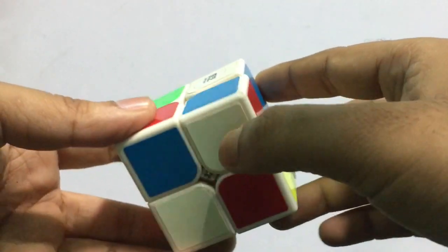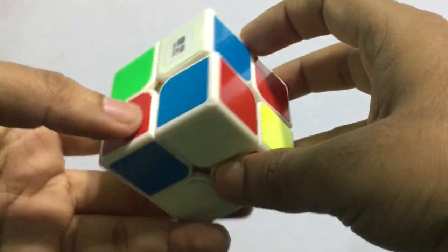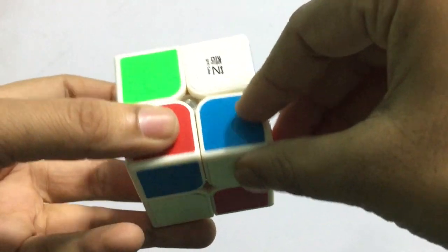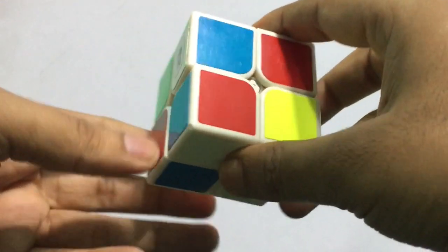You take whichever white as the initial part and put it downward. Like this white, I'm taking this white and putting it downward. Now you think about this color, blue and red.